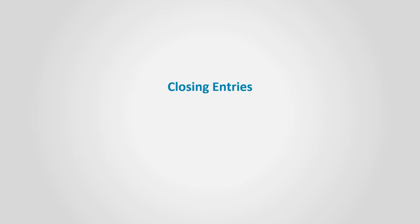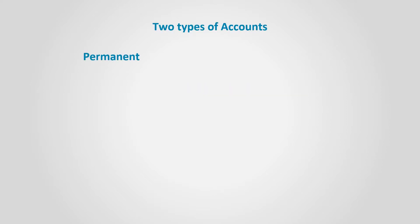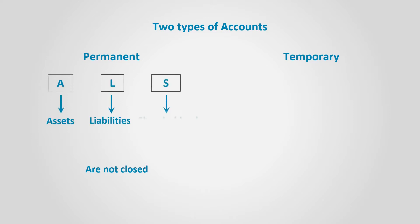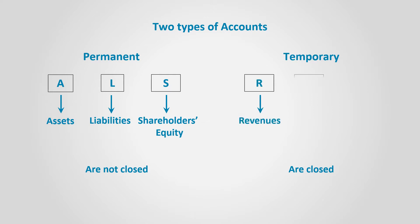Closing entries. We can classify accounts as permanent accounts and temporary accounts. Permanent accounts run from one period to the other — these are assets, liabilities, and shareholders' equity. Temporary accounts are closed at the end of the period. These are what I call RED accounts, as an abbreviation for revenues, expenses, and dividends.